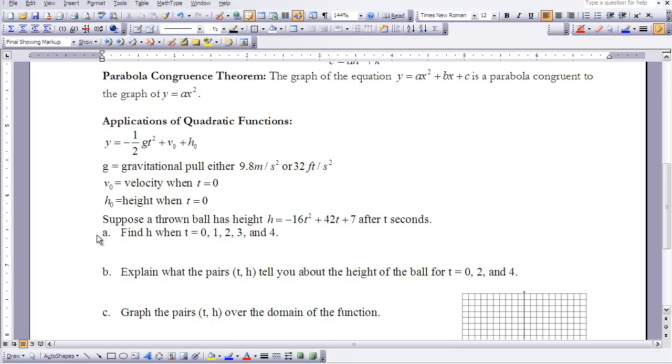Suppose a thrown ball has height h equals negative 16t squared plus 42t plus 7 after t seconds. Find h when t equals zero, one, two, three, and four. But before evaluating our height at the different times, let's just evaluate some things we can tell from this equation.